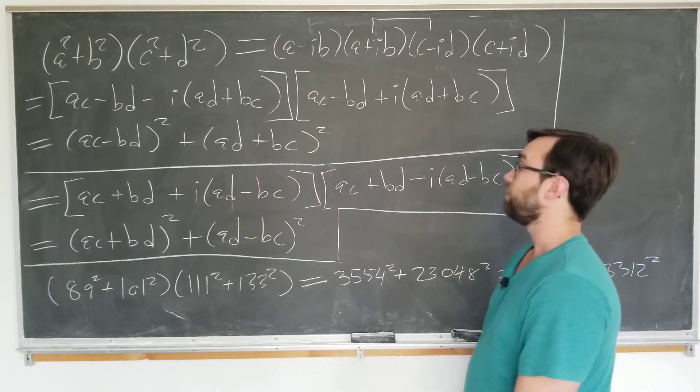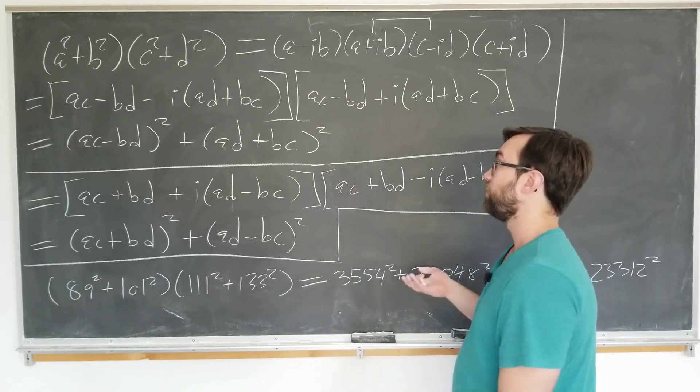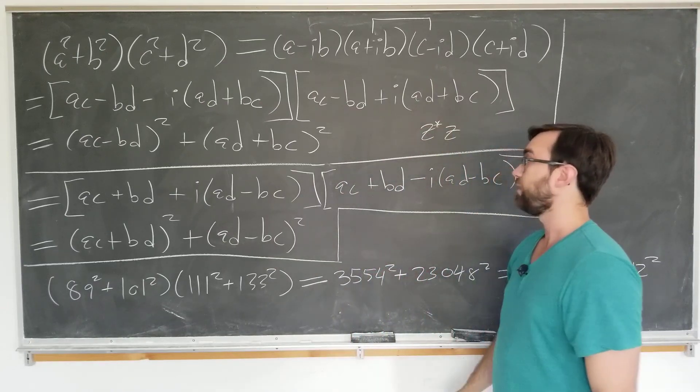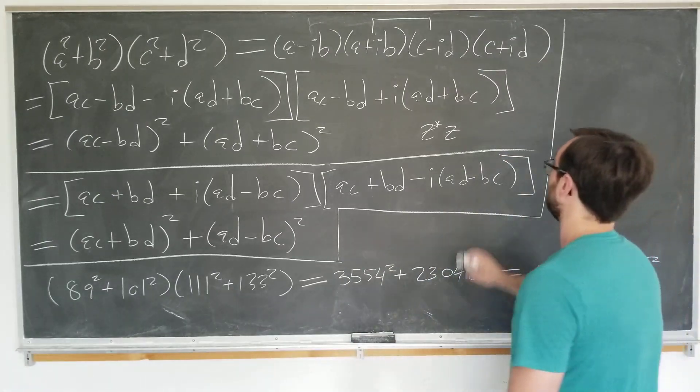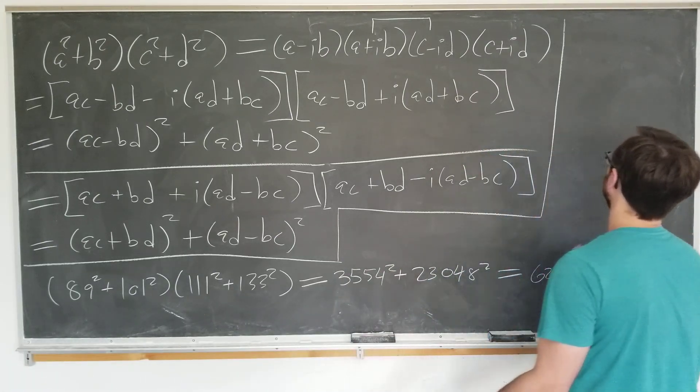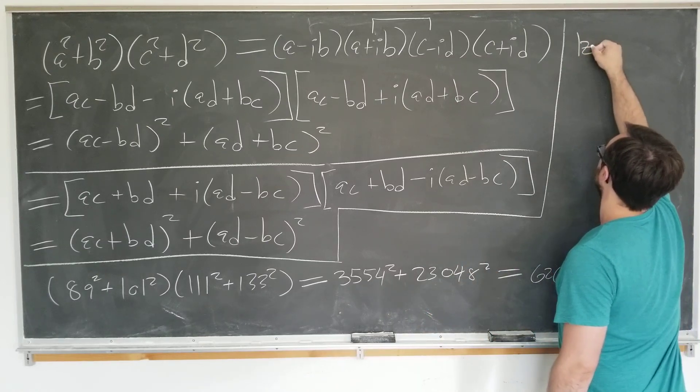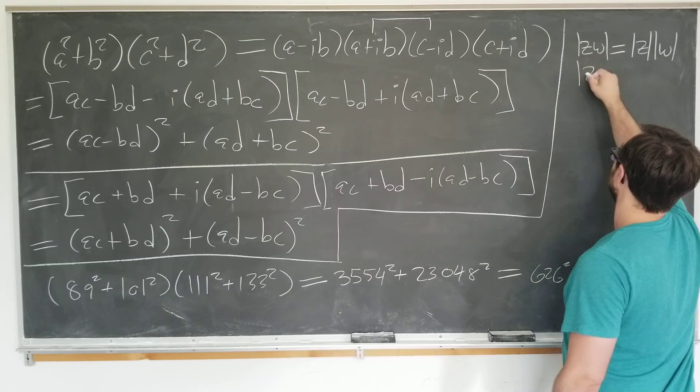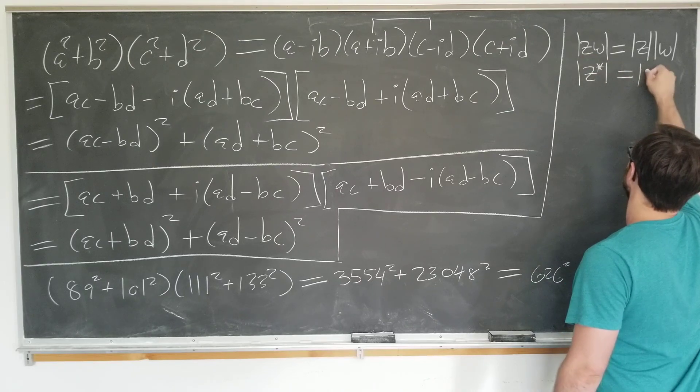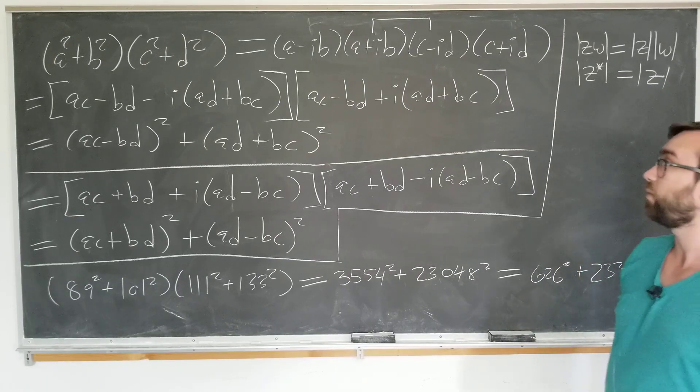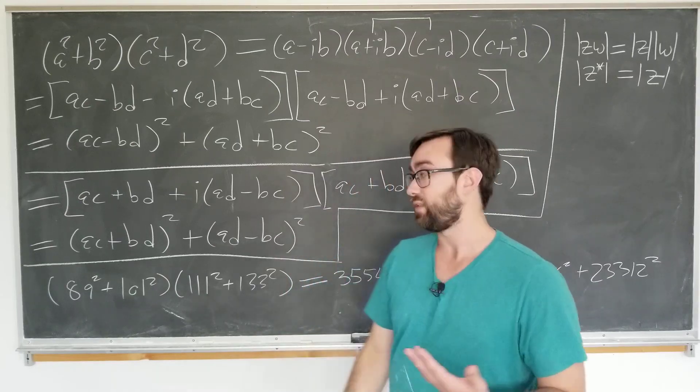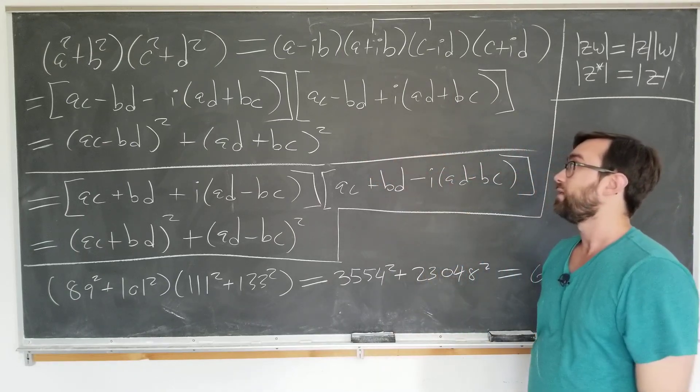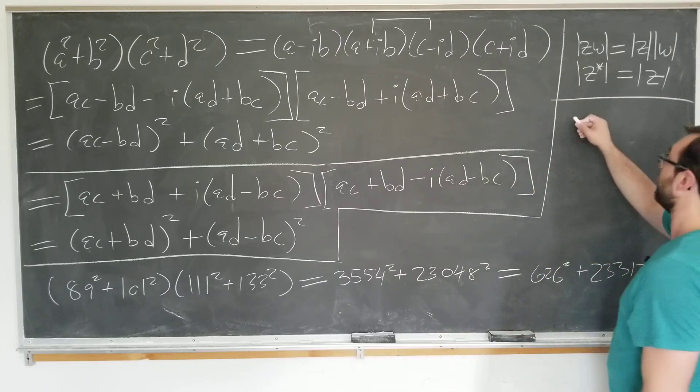But the real question that I had while working through the proof is why does this combination magically have a z star z style where everything just works out nicely? Well, it's actually a consequence of two simple rules. If we have two complex numbers Z and W and take the magnitude of them, it's the same as magnitude of Z times magnitude of W. And also the magnitude of the conjugate is the same thing as magnitude of the complex number itself. I want to go through the proof that we did here in a more general method to illustrate this.